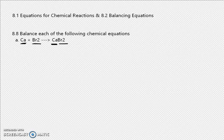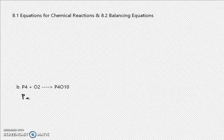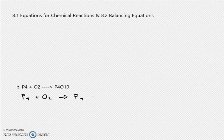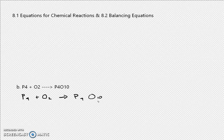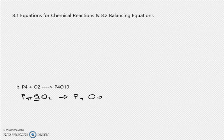Now I'm going to show you how to balance an unbalanced equation. We have P4 plus O2 on the left and P4O10 on the right. To get the 10 oxygens on the right, you have to put a 5 in front of O2, because 5 multiplied by 2 is 10. Now your equation is balanced.